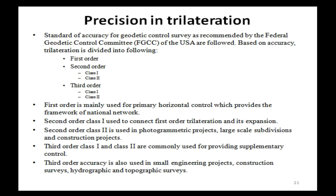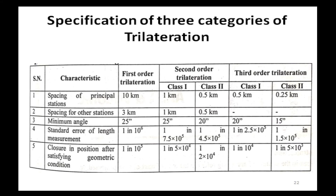First order is mainly used for primary horizontal control, providing the framework of the national network. Second order class 1 is used to connect first order trilateration and its expansion. Second order class 2 is used in photogrammetric projects, large-scale divisions, and construction projects. Third order class 1 and class 2 are commonly used for providing supplementary control. Third order accuracy is also used in small engineering projects, construction surveys, and hydrographic and topographic surveys.